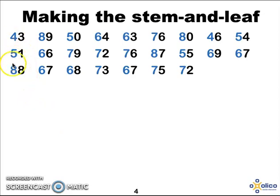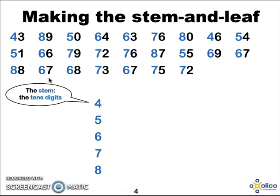What we do is we take the tens digits, which vary from 4 to 5 to 6 to 7 to 8, and we write them down in a line below each other. So the stem is made from the tens digits. Then we draw a line to separate the rest of the data.